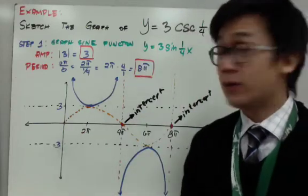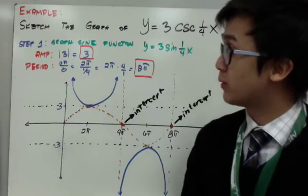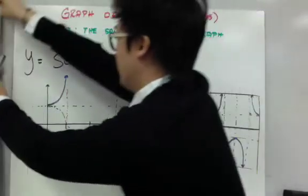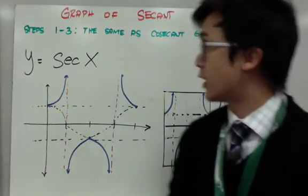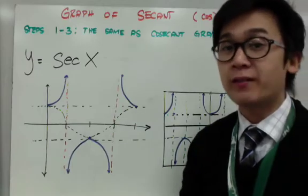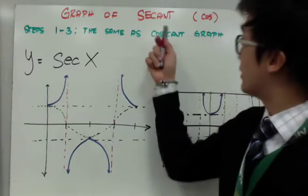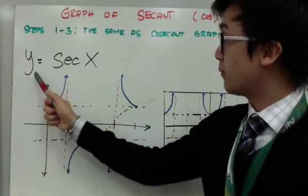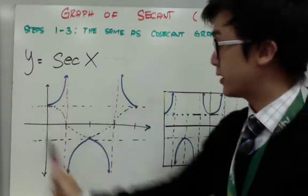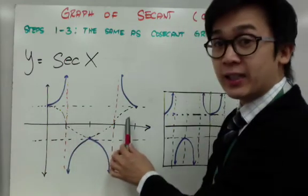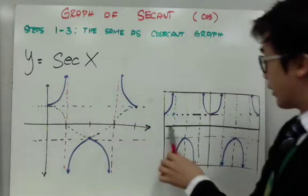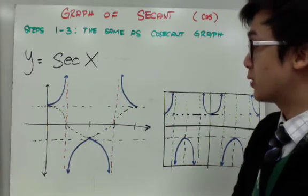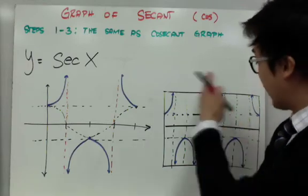Now let's graph the other inverse trig function — the secant function. Here's the graph of a secant function. The steps in graphing the secant function are similar to those for the cosecant function. You will need to graph the inverse of secant, which is cosine, and that will be your foundation to graph the secant function. The graph of y equals secant x has a behavior similar to this, and it's pretty much the same as the cosecant function, but it starts at a different point in the period.